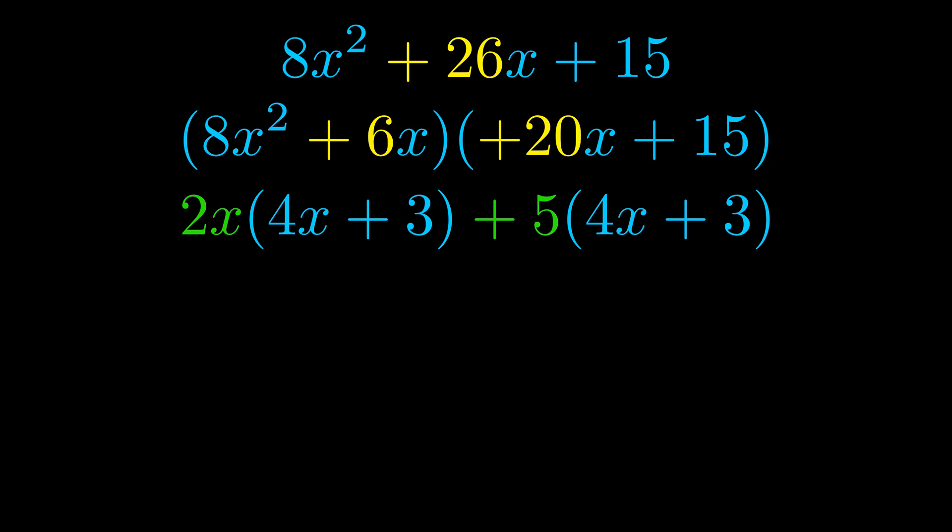Notice also how what remains inside of the parentheses is the same in both cases. The blue values are the same. Those blue values will become one of our factors and we will combine the two green values, the GCFs that we pulled out, to get the other one. And that is our fully factored equation.